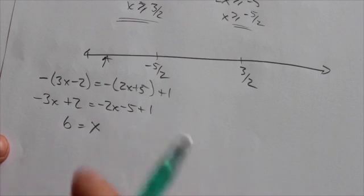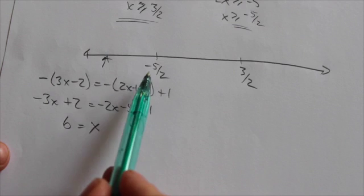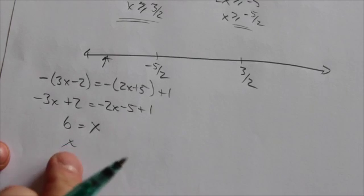Well, no, actually that doesn't make sense because the values of x that I'm expecting here should be less than negative 5 halves and that's not true. So that can't possibly work. There's no solution coming from here.